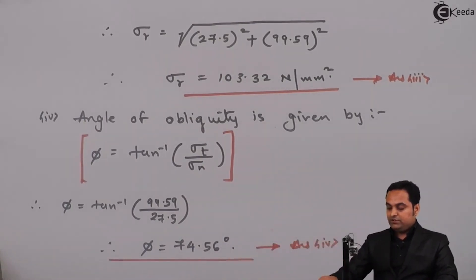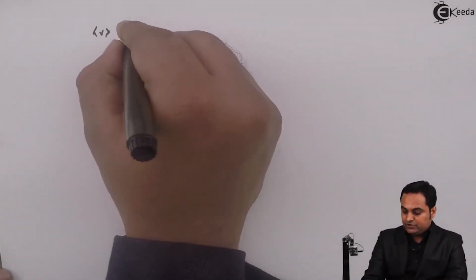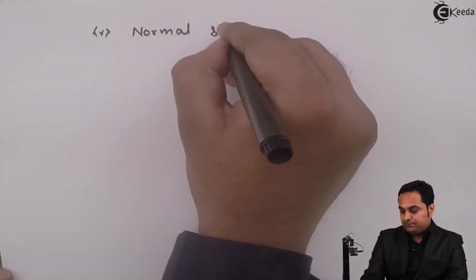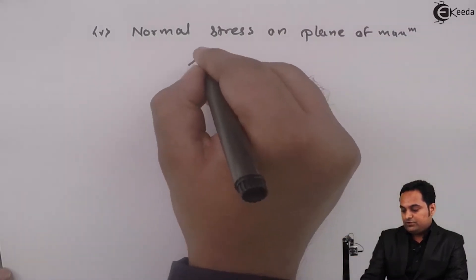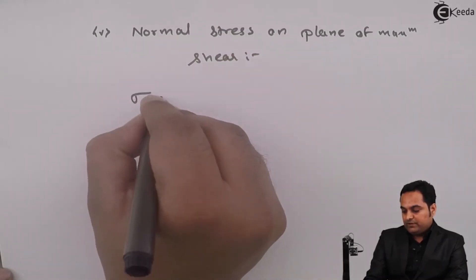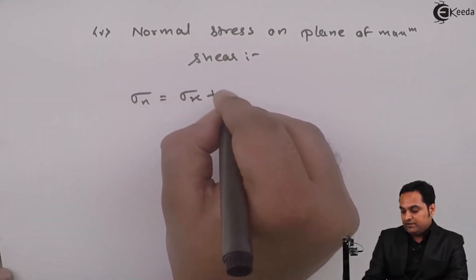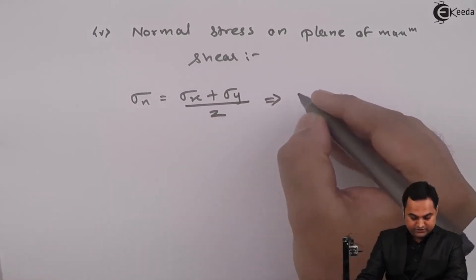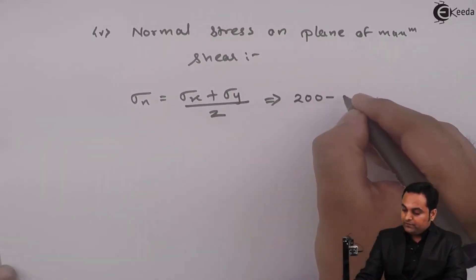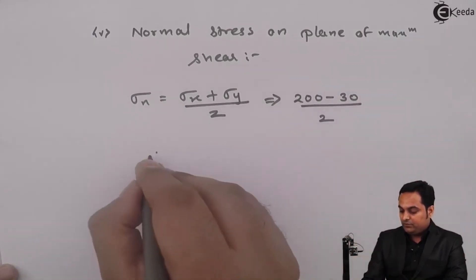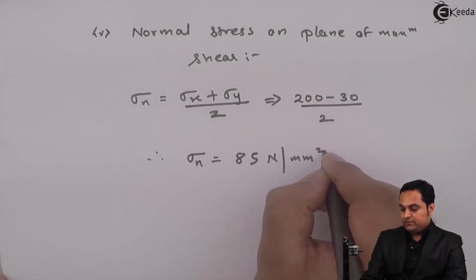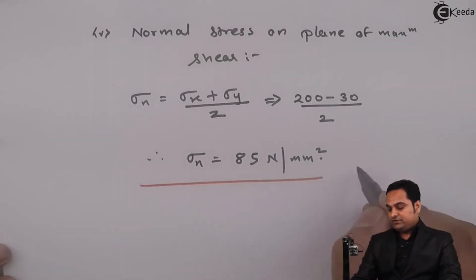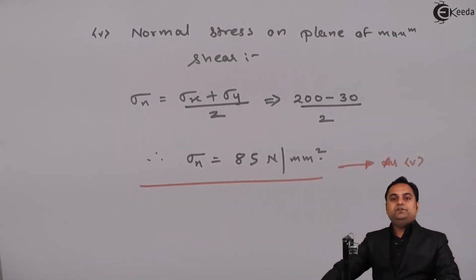Finally, we calculate the normal stress on the plane of maximum shear stress. The formula is sigma n = (sigma x + sigma y) / 2. Substituting sigma x = 200 and sigma y = −30, the normal stress on the plane of maximum shear comes out to be 85 newton per mm square. This is the fifth and final answer, completing the problem.